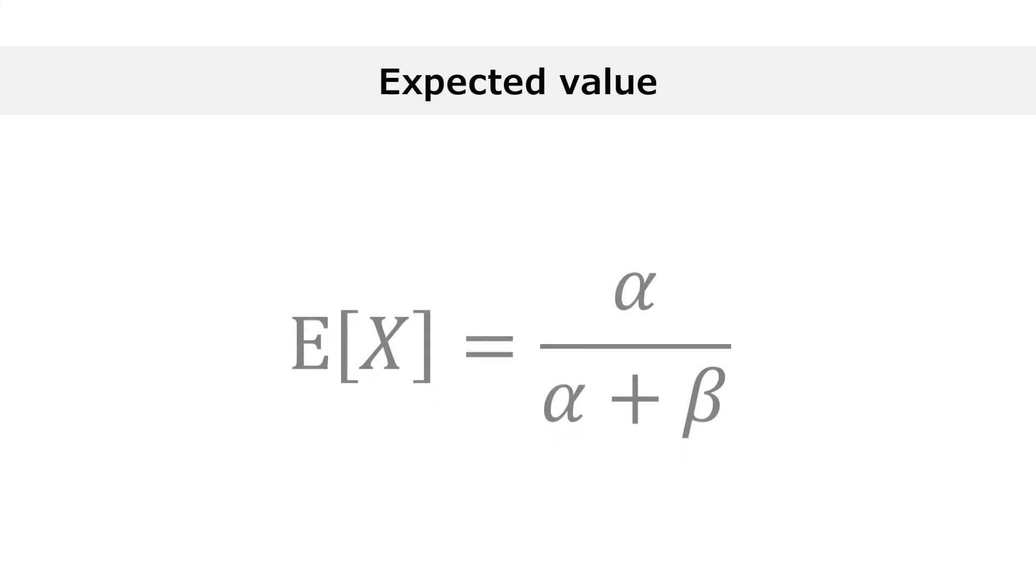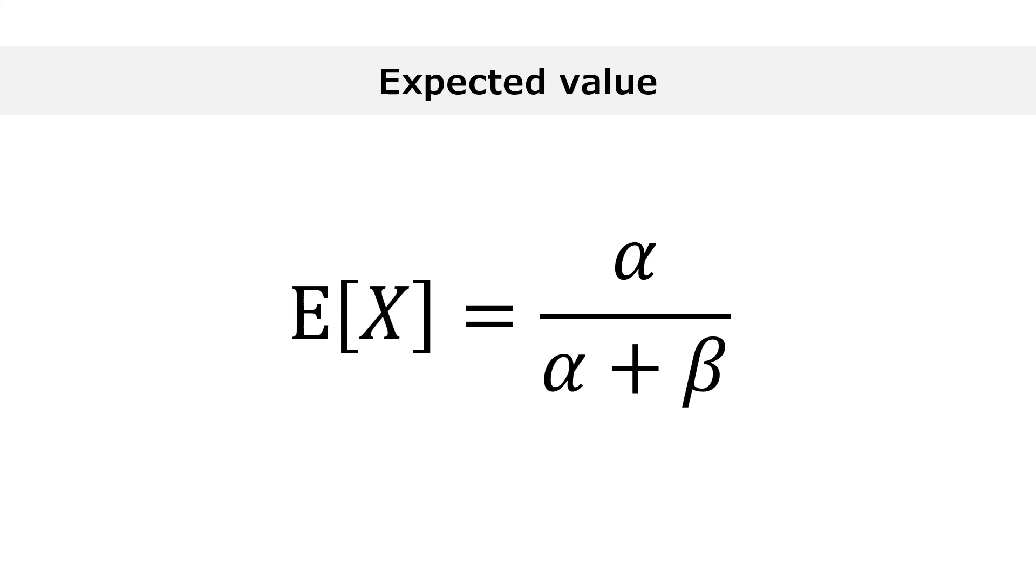With this example in mind, it should be easy to understand and memorize the formula for the expected value of a beta random variable.